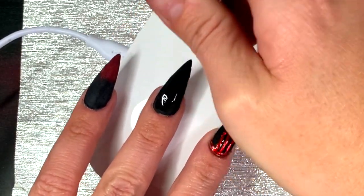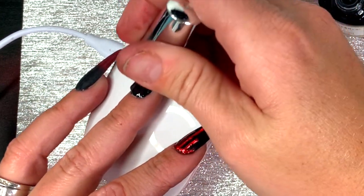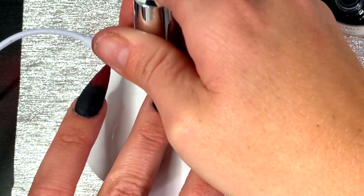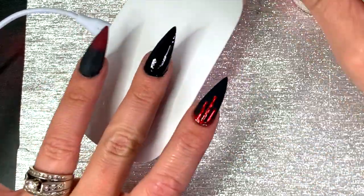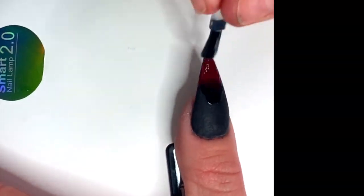Our last step is applying our top coat. This is a shiny top coat, I'm putting that on the middle finger where it's just solid and then on my ombre nails as well. I'm going to leave the other nails because I want them to be matte. That completes this design. I put it in my lamp for 90 seconds, apply some cuticle oil, and boom, you are done.